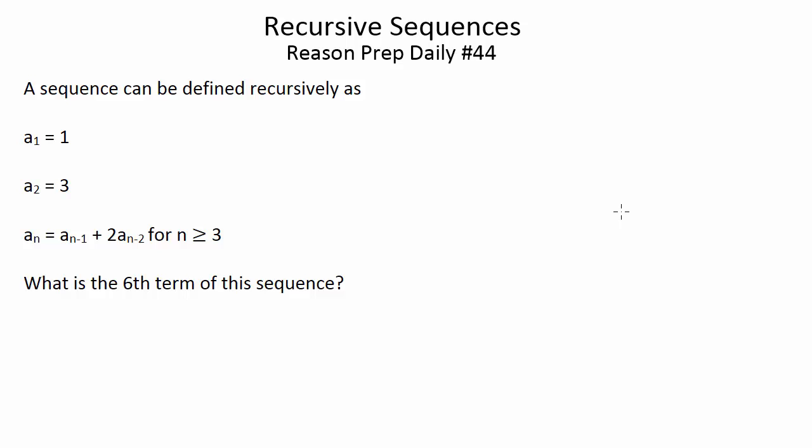In a recursive sequence, each successive term is defined by some combination of the terms before it. So, in order to generate every additional term, you have to look back at the previous terms and do something with them to figure out that next term.